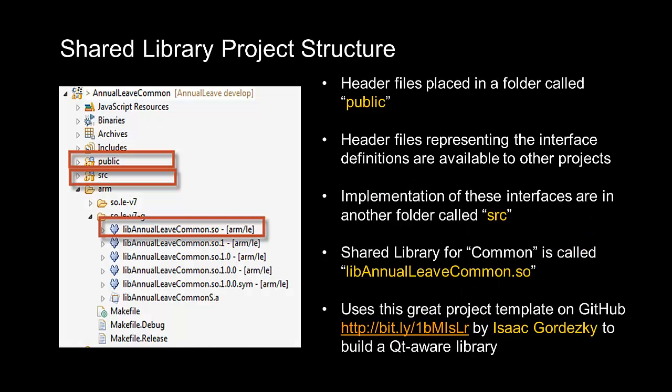Let's look at each of these projects in a bit more detail. Let's deal with the two shared library projects first, since they are dependents of the GUI and service projects, and they're almost identical in terms of structure. The AnnualLeaveCommon and AnnualLeaveAdapter projects are both shared library projects with three important aspects. The header files of many of the classes need to be exposed to other projects, since they embody the API exposed by the library. This is achieved by placing the header files in a folder called public in the project, in contrast to the implementation of the APIs in the source folder. The shared library itself is called lib-annualleave-common.so, and the adapter project's shared library is called lib-annualleave-adapter.so.